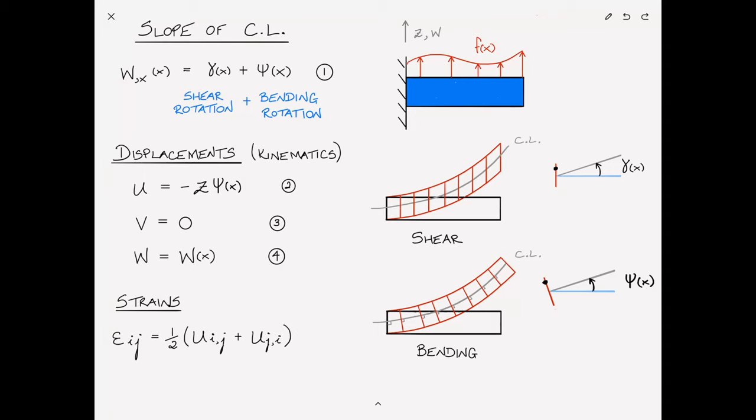In this form, the displacements are referred to as u1, u2, and u3 — convenient for index notation. In our case we've used u, v, and w, so u corresponds to u1, v to u2, and w to u3. Here i and j range from 1 to 3, or equivalently take the values x, y, and z. We'll call this equation 5.